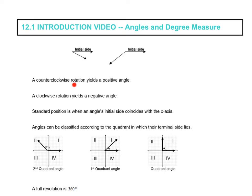A counterclockwise rotation yields a positive angle. So, let's say that this is my initial side of my angle, and then counterclockwise means that I'm going to go this way. Let's say I go that far. Here's my terminal side. That is a positive 90 degree angle.